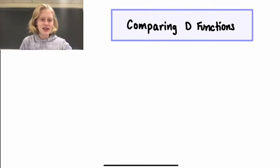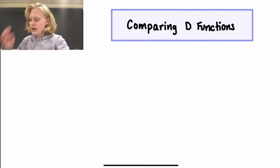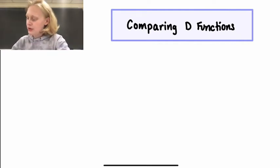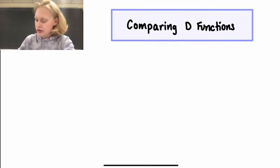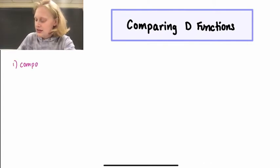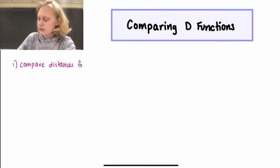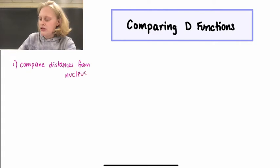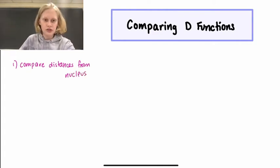Hi everyone, my name is Maggie and in this video we're going to continue comparing d-functions. In the last video we came to a couple conclusions. The first one is that if we want to compare distances from the nucleus, then we need to compare values along the horizontal axis.